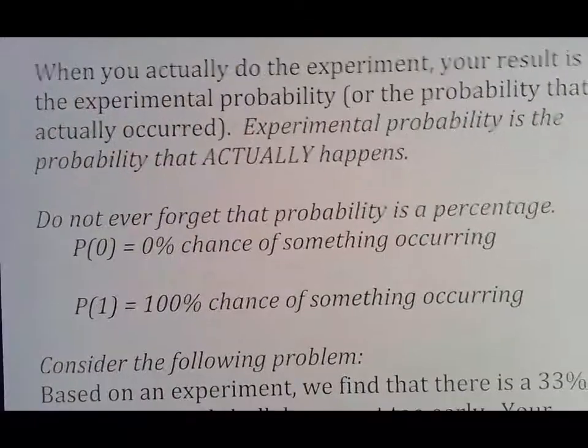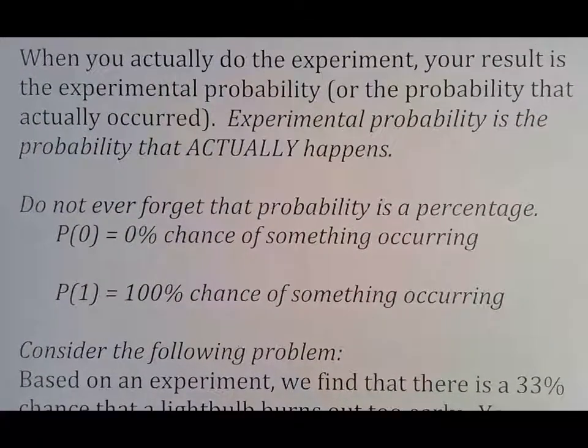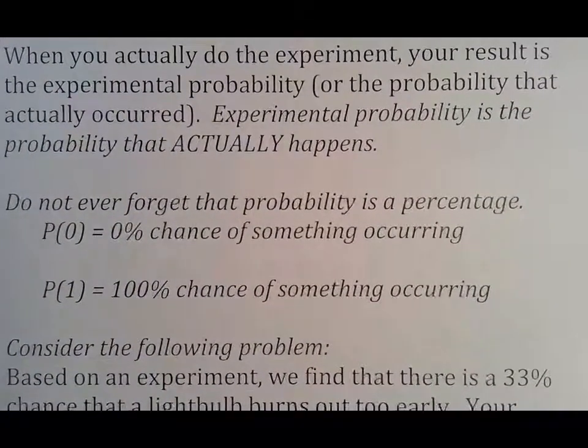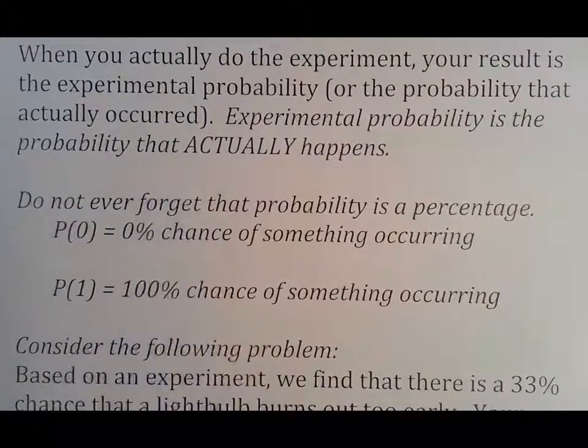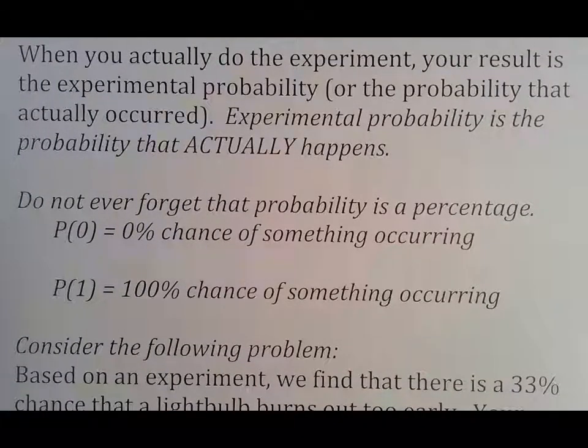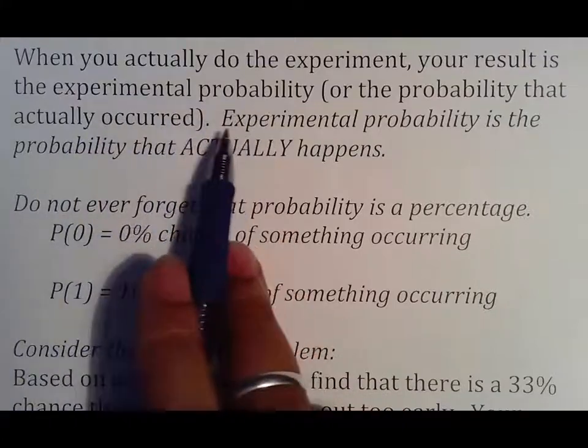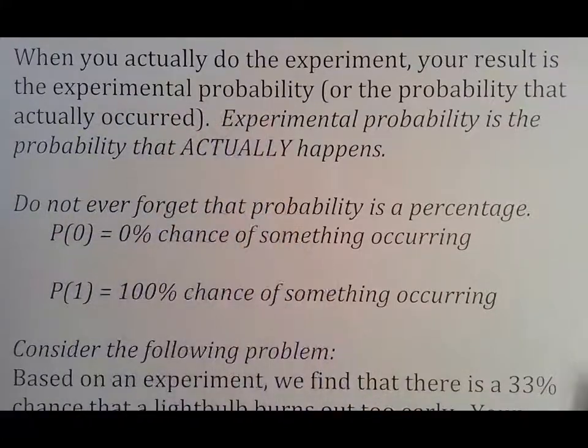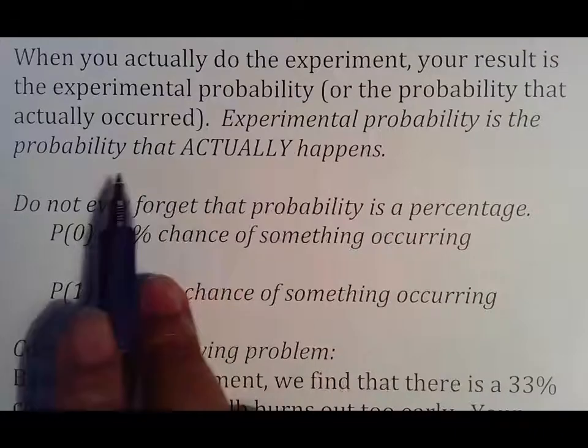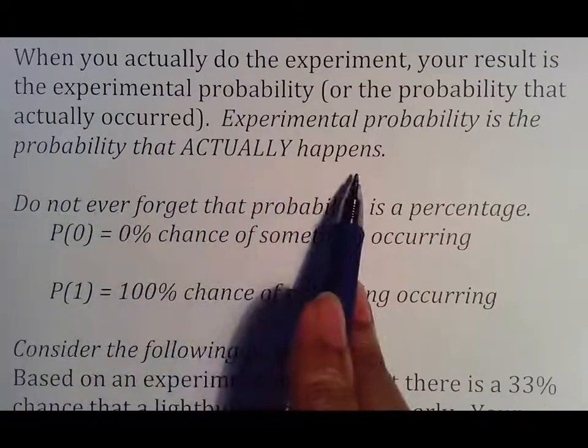How many of you have ever flipped a coin 10 times? You rarely end up with five and five. So when you actually do the experiment, that is called experimental probability. Theoretically we use 50% chance. Experimental probability just means you actually did an experiment and you're using the experiment's results to run your results.